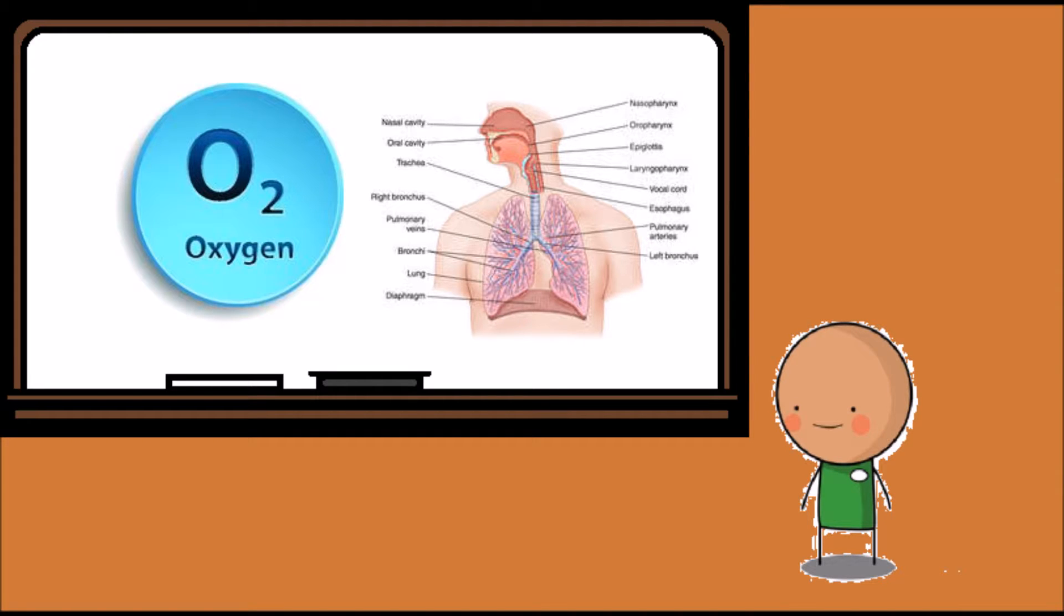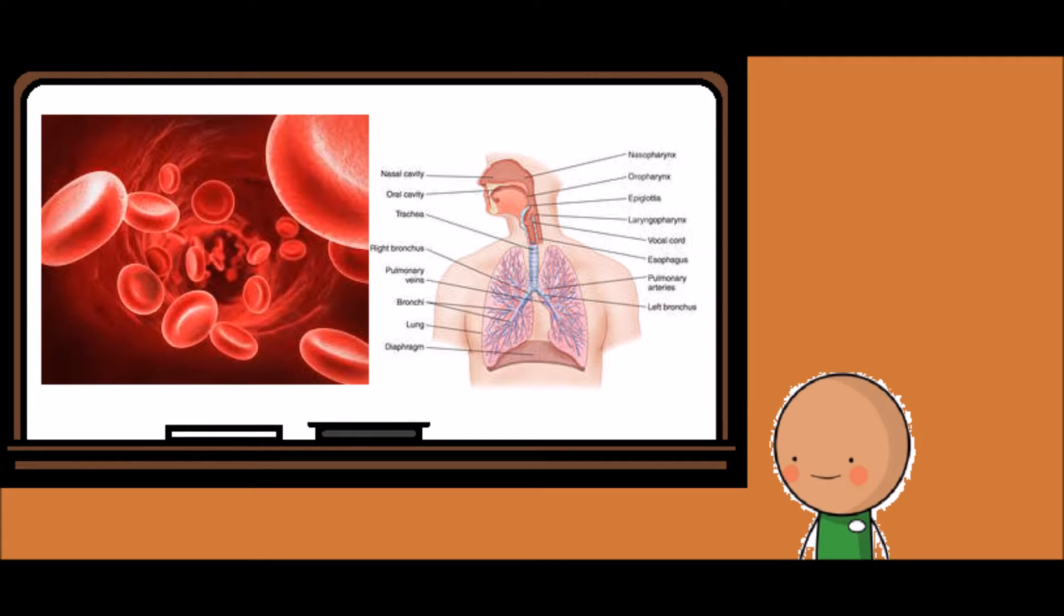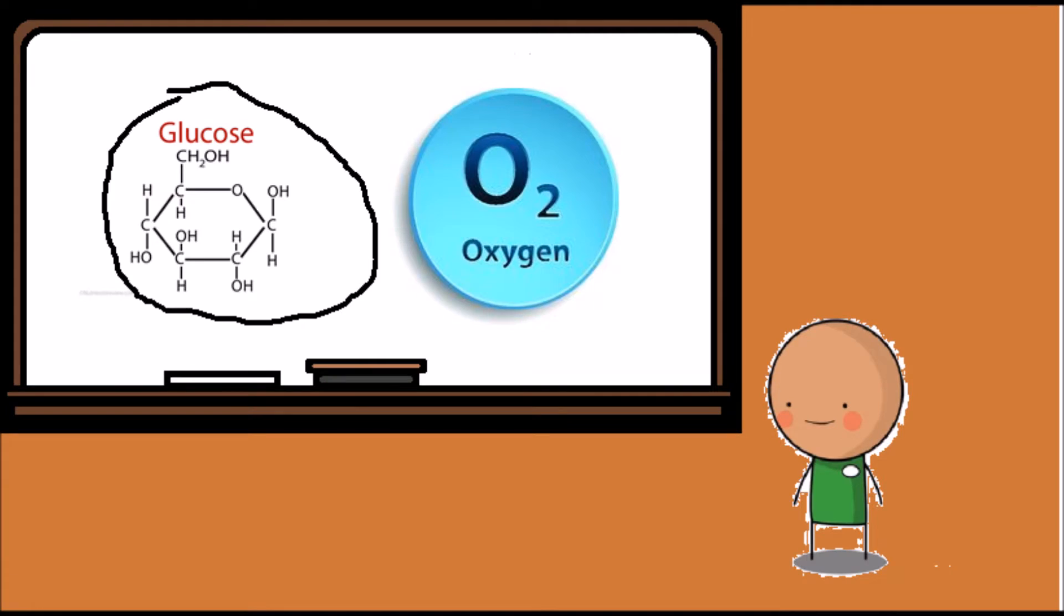The oxygen is then transported by red blood cells throughout our entire body via the capillary system. Glucose, combined with oxygen, are both involved in cellular respiration, a powerful process that creates ATP, the source of energy for all cells.